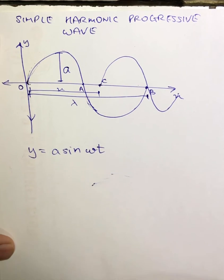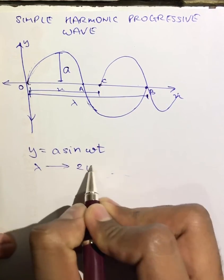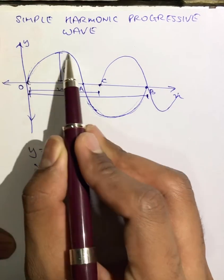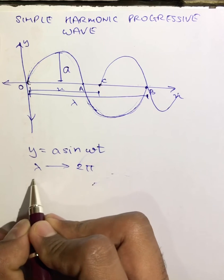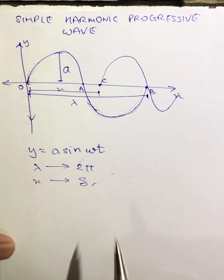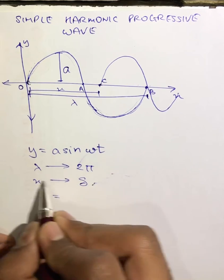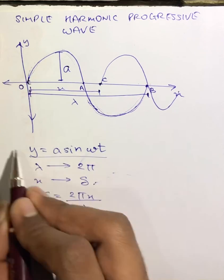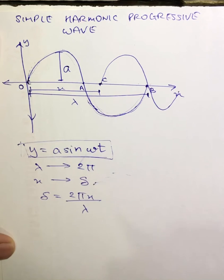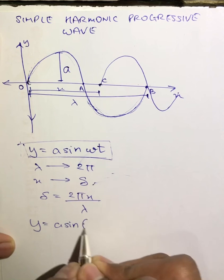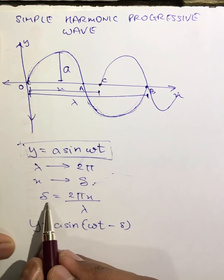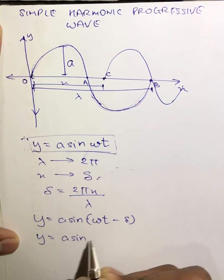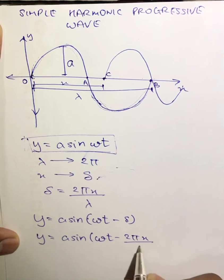Let's consider this distance to be x, so the second wave has started from a distance of x. We know that lambda corresponds to 2π, so one wavelength (lambda) undergoes a 2π phase difference. Therefore, x will correspond to a phase delta, which by cross multiplication is delta = 2πx/λ. Since the first wave equation was y = a sin(ωt), the equation of the second wave will be y = a sin(ωt - δ) = a sin(ωt - 2πx/λ).